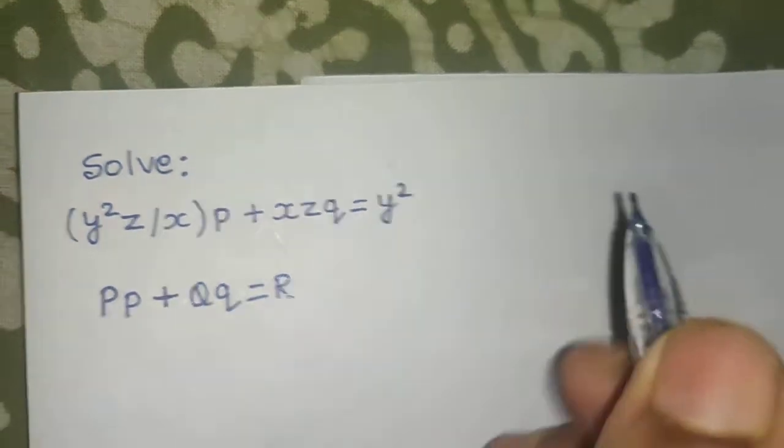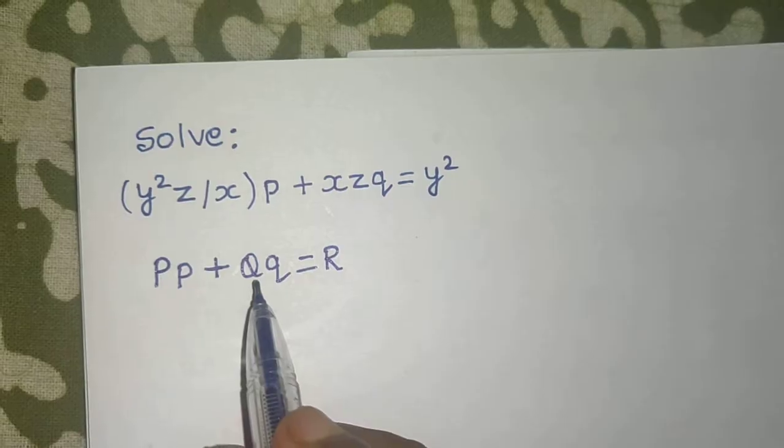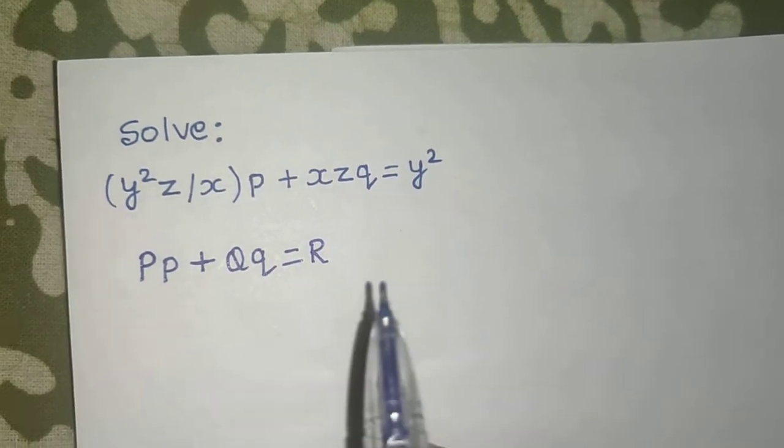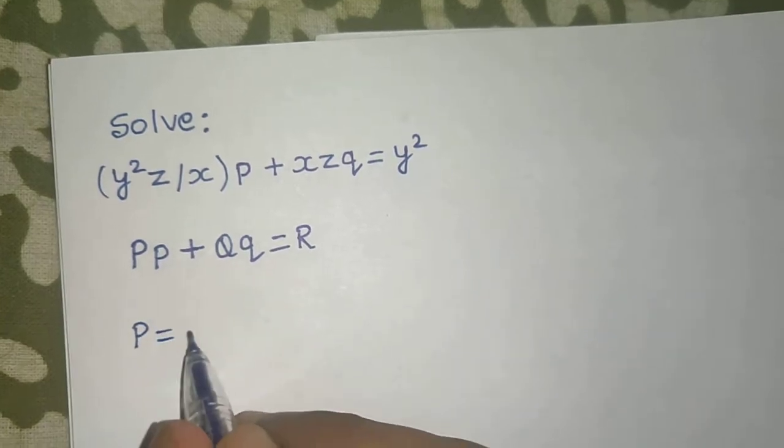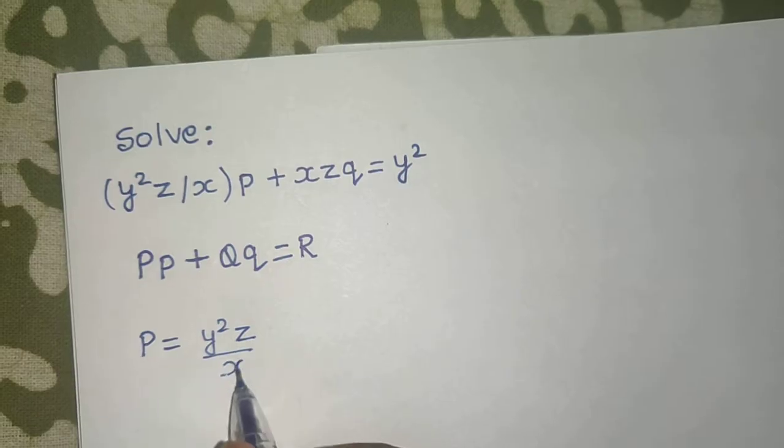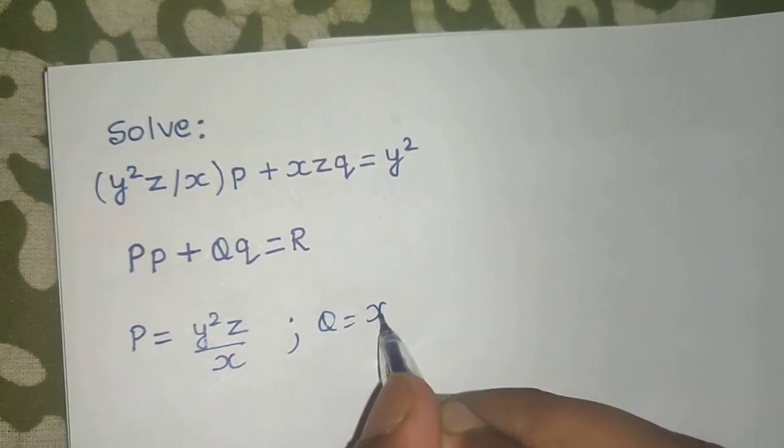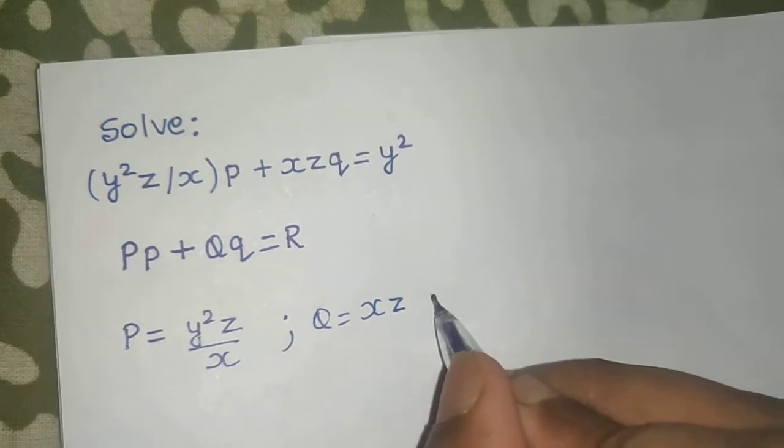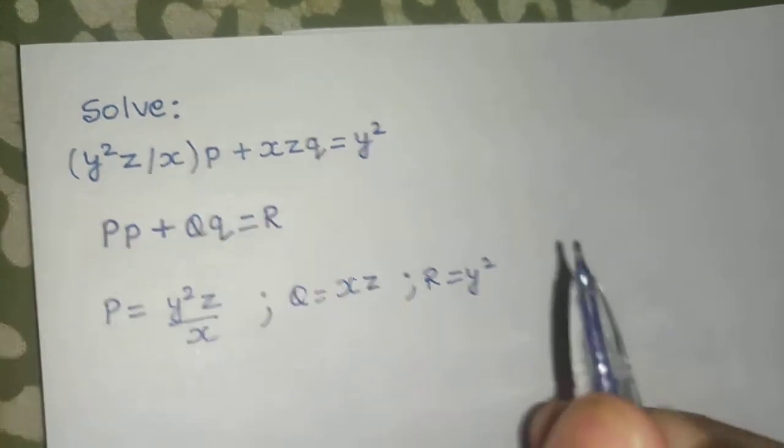Now identify what is capital P, what is capital Q, what is capital R. That is the first step. So I can easily say that my capital P is y square z divided by x. My capital Q is xz and my capital R is y square. This is the first step.